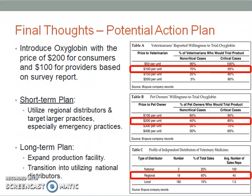For long-term planning, BioPure should expand its production facility once Oxyglobin and Humapure are successfully released and established in the marketplace, in order to accommodate the larger production capacity required for both products simultaneously. Moreover, BioPure should transition from regional distributors to national distributors as the company expands its production capacity. Overall, launching Oxyglobin first will be a good stepping stone to introduce Humapure.